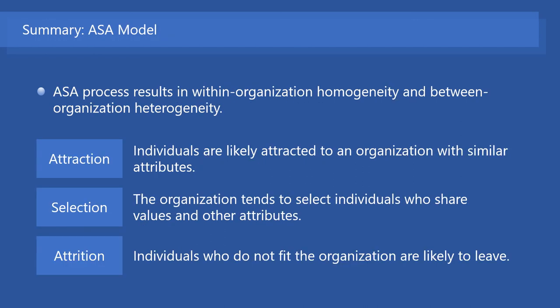In summary, the ASA model proposes that individuals are likely attracted to an organization with similar attributes. Then, the organization tends to select individuals who share values and other attributes. Finally, individuals who do not fit the organization are likely to leave. These processes result in within-organization homogeneity and between-organization heterogeneity. Thank you for listening.